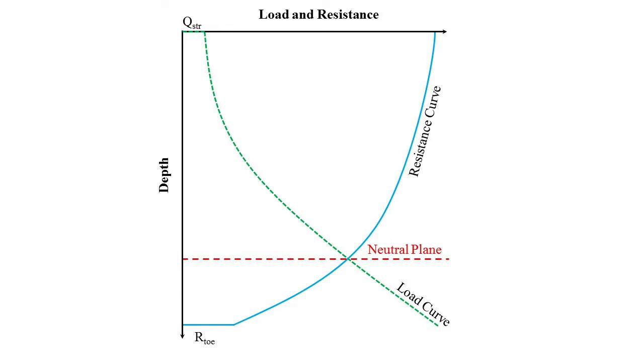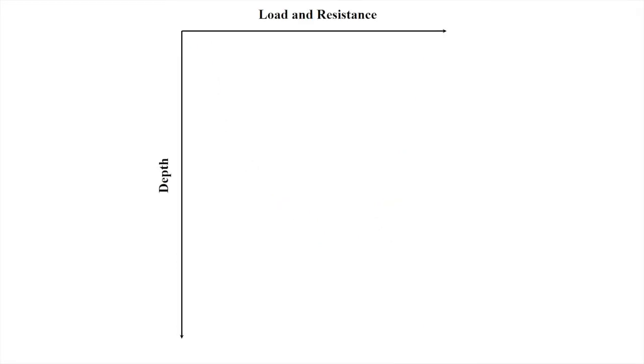The load curve in the load resistance plot is created by starting at the top of the deep foundation element and adding the proposed unfactored structural load to the predicted cumulative unit skin friction as a function of depth from the top of the deep foundation element to the bottom of the deep foundation element.